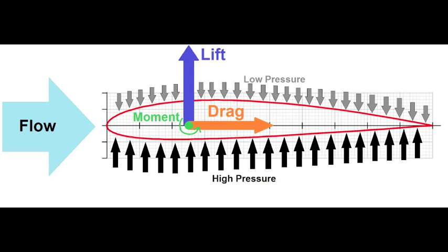What is lift exactly? Lift is a force caused by a difference in pressure. When a fluid such as air flows around an object, an area of high pressure will form on one surface and an area of low pressure will form on another. The lift force will be directed from the high pressure to the low pressure side.